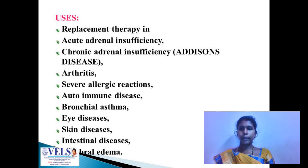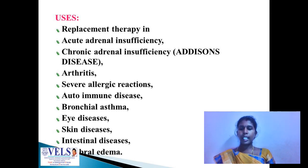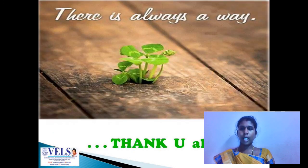Uses of mineralocorticoids include replacement therapy in acute and chronic adrenal insufficiency. They are also used in arthritis, severe allergic reactions, autoimmune disorders, bronchial asthma, eye infections, skin disorders, intestinal disease, and cerebral edema. That covers the basics of corticosteroids, their dosages, uses, and adverse drug reactions. Thank you.